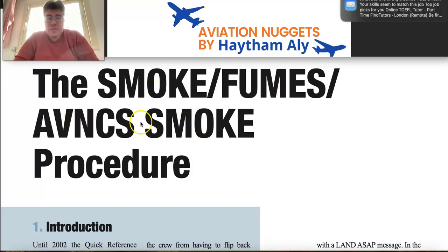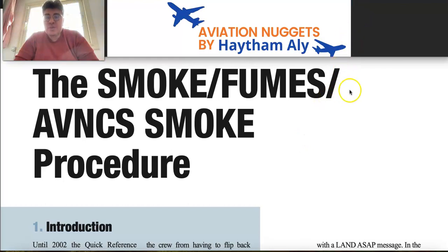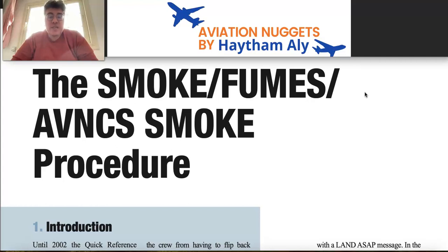In this first part of our series on smoke, fumes, and the avionics smoke procedure, we are going to speak about the locations where smoke may persist inside the aircraft. We may have smoke from the cabin, lavatory, crew rest compartment, avionics, cargo compartment, or air conditioning bay.